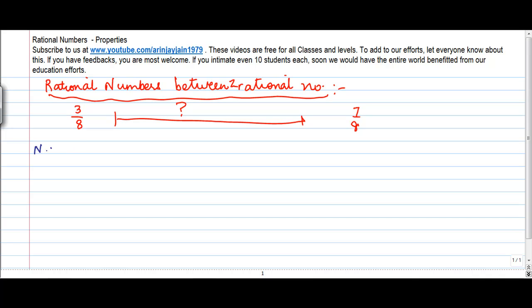For natural numbers, if you were to find numbers between 1 and 10, you know that there is 2, 3, 4, 5, 6, 7, 8, and 9. Right?